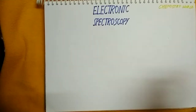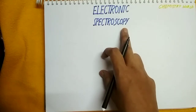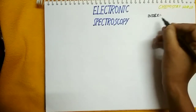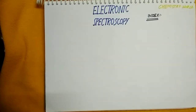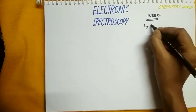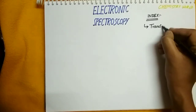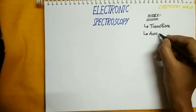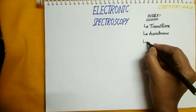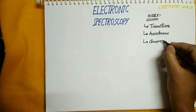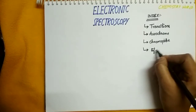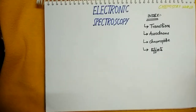Hello students, welcome to the chemistry world. Today I am going to discuss about electronic spectroscopy, also known as UV spectroscopy. First, let us consider the index. The topics are: types of transitions exhibited by electronic spectroscopy, auxochrome, chromophores, and the effects exhibited by UV spectroscopy.